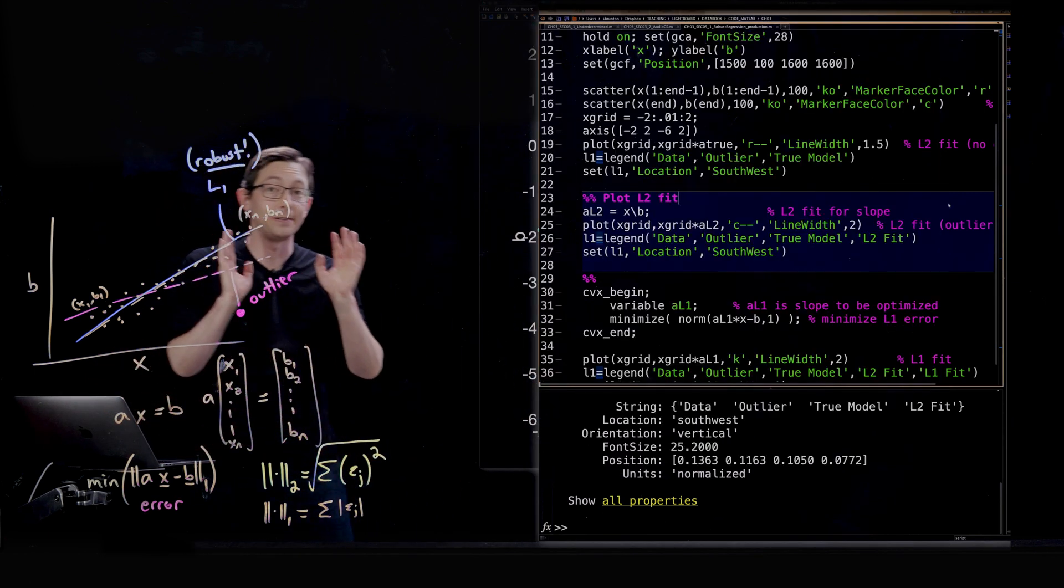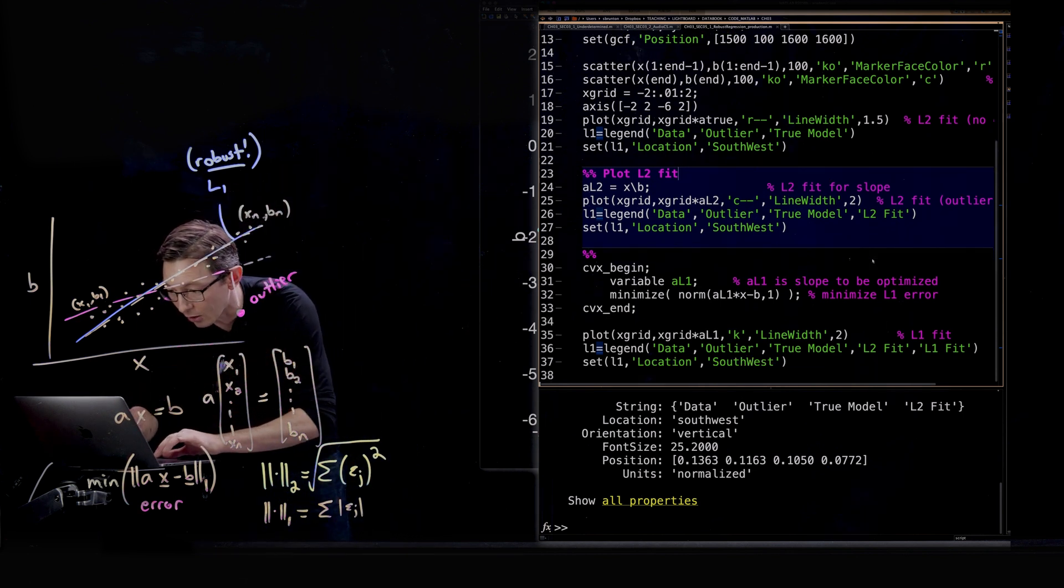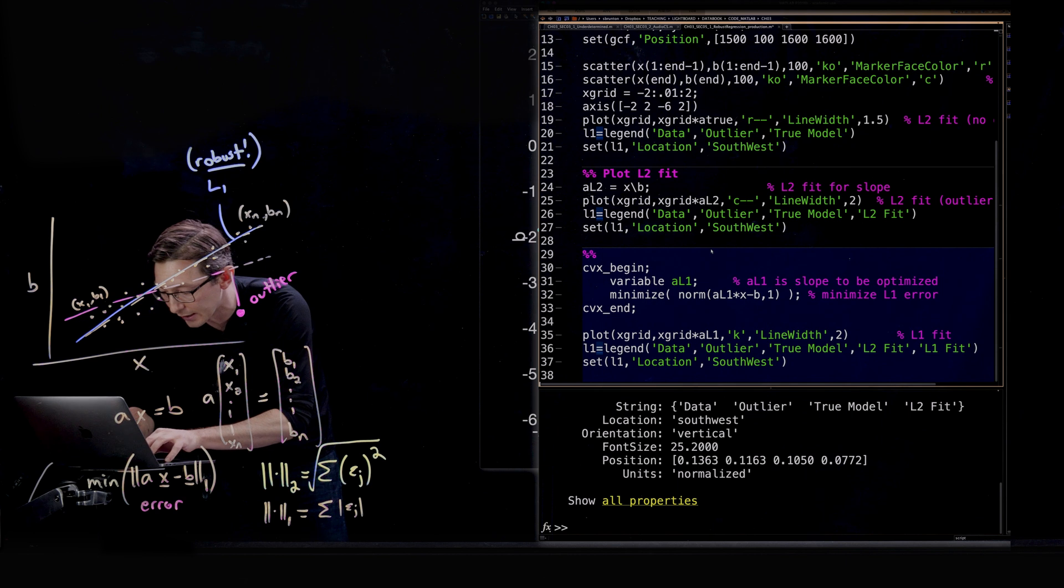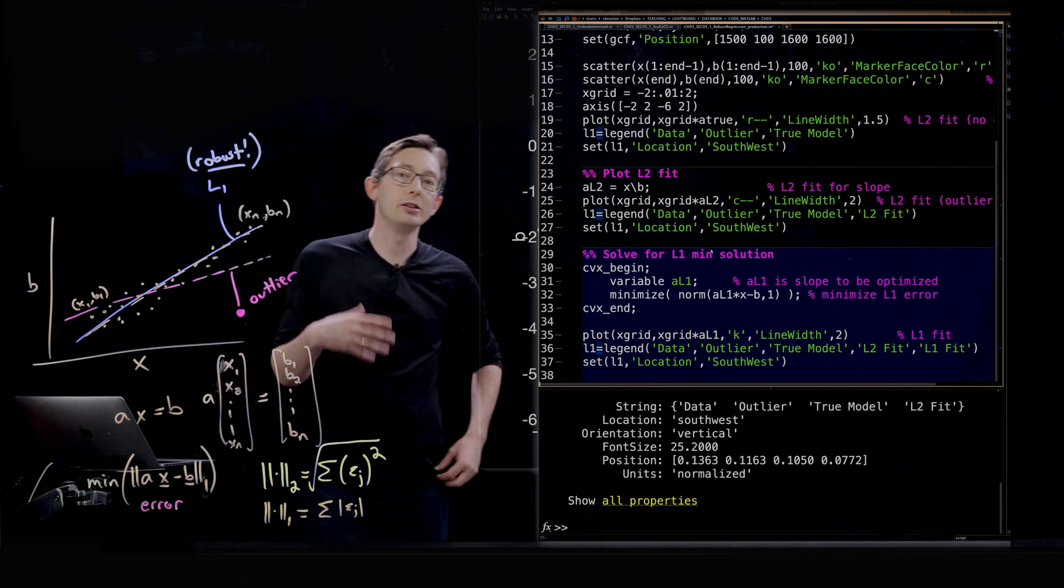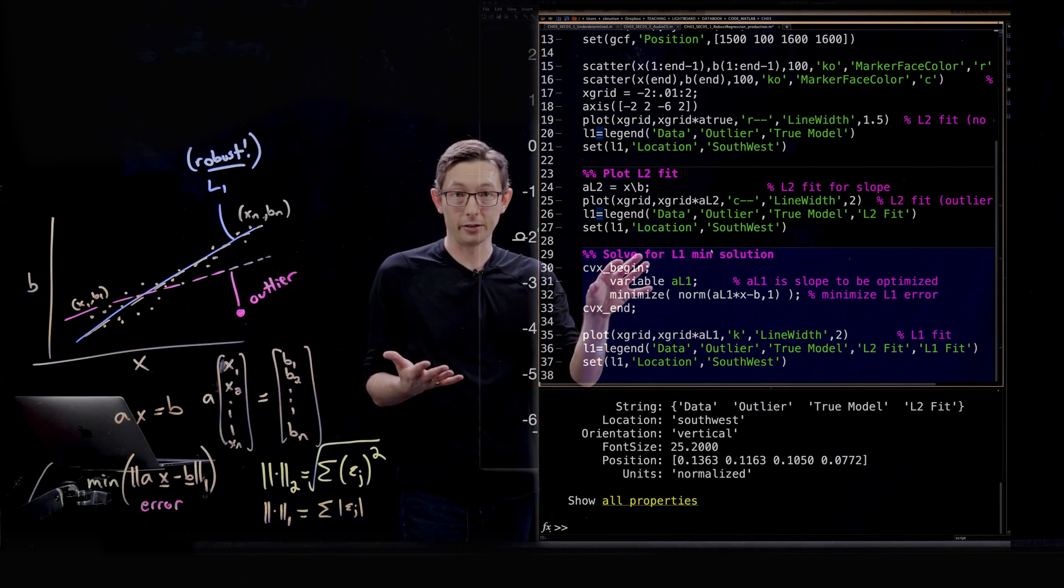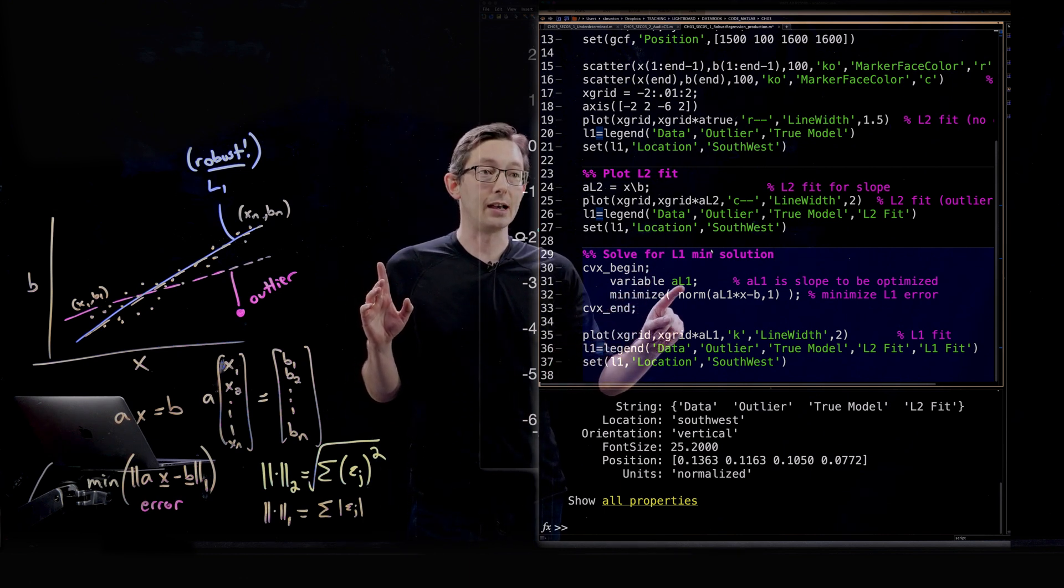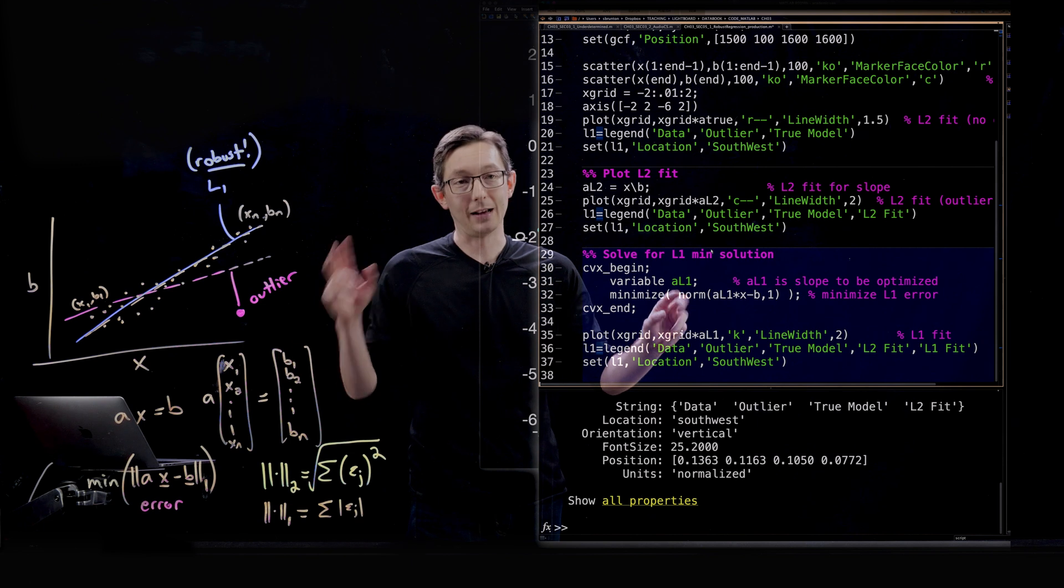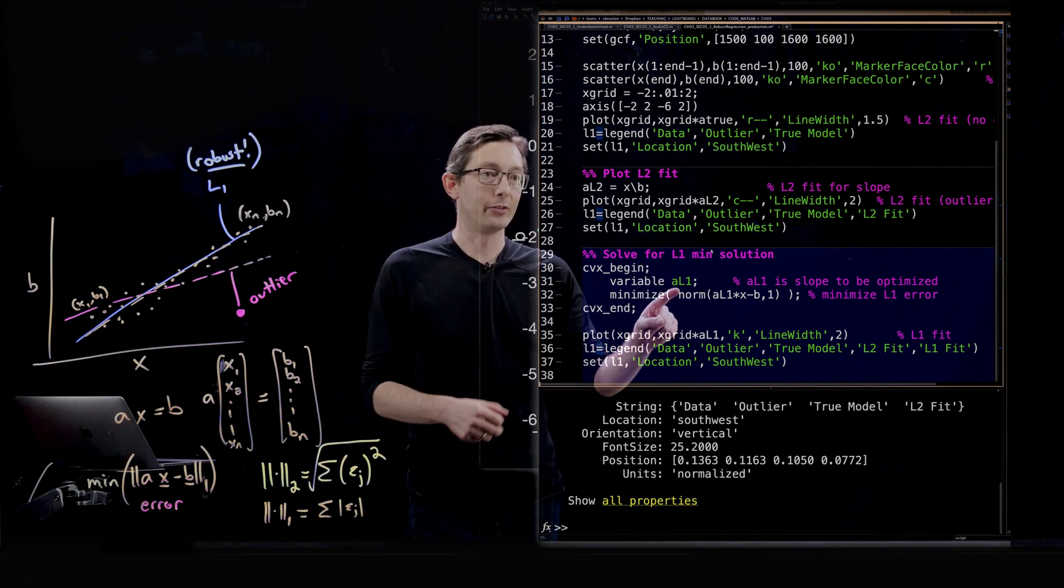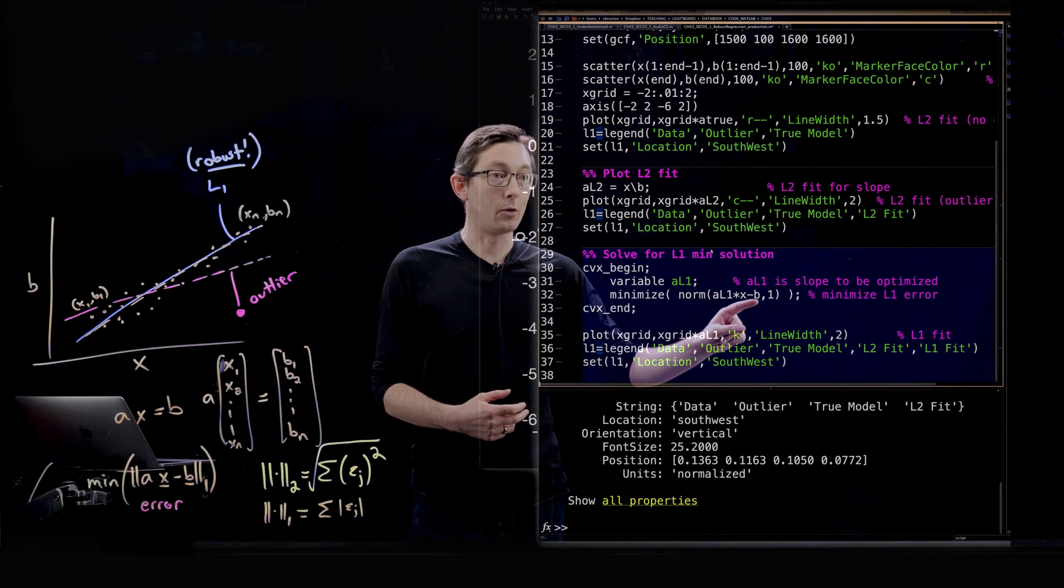But this is solvable, this is a fixable problem and this is really kind of neat, is that you can also solve for the L1 min solution. And we're going to do that again using CVX, this convex optimization toolbox. You'll have to download this and install it in your MATLAB, but it's pretty easy to do. So we are going to introduce this variable, this kind of L1 minimum version of A and we're going to minimize the one norm of the error.